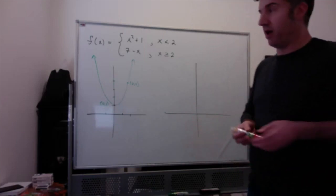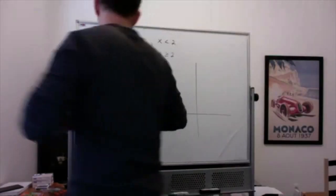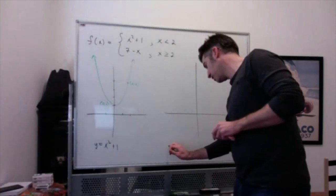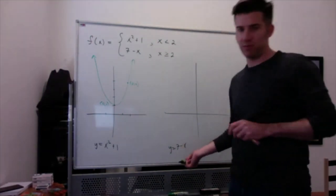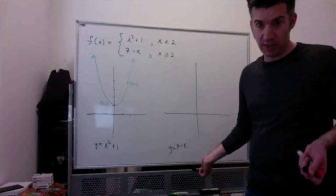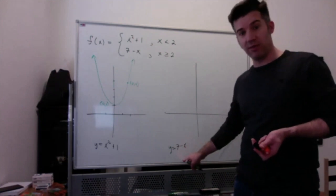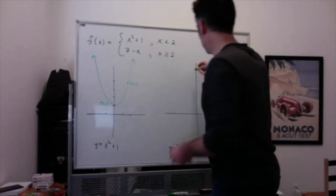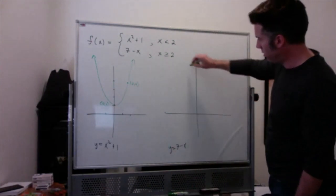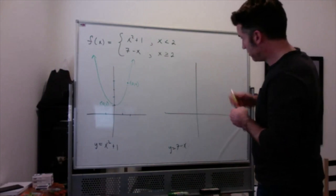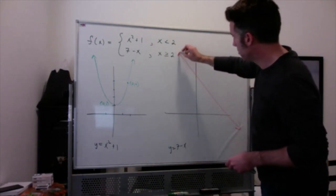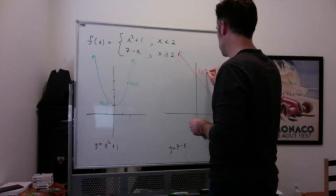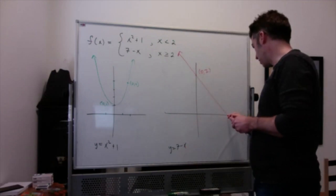y equals seven minus x is just a line. If x is zero, y is seven; if y is zero, x is seven, so the intercepts are both seven. If you think about transformations, you'd rewrite it as y equals negative x plus seven — so you're taking y equals x, flipping it, and shifting up seven.